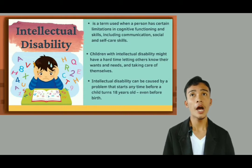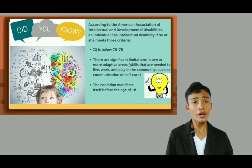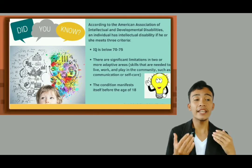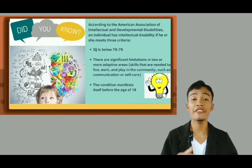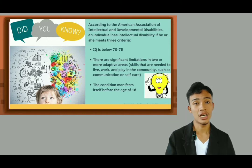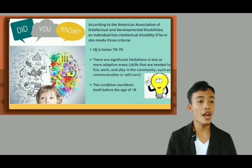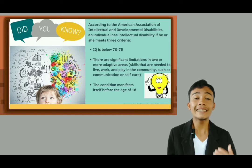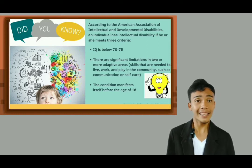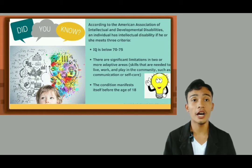Intellectual disability preferably happens to children below 18 years old. According to the American Association of Intellectual and Developmental Abilities, an individual has intellectual disability if he or she meets three criteria: first, IQ is below 70 to 75; second, there are significant limitations in two or more adaptive areas — skills that are needed to live, work, and play in the community such as communication or self-care; and last, the condition manifests itself before the age of 18.